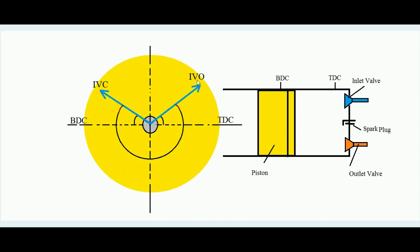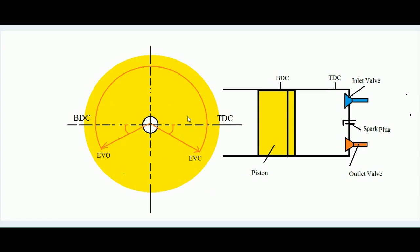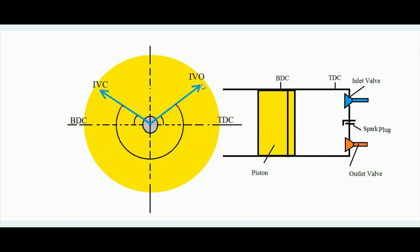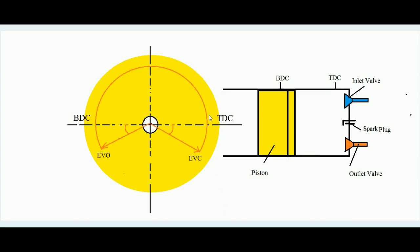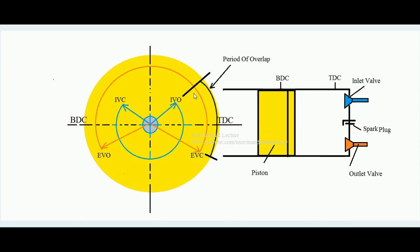We observe that the inlet valve opens a few degrees before the end of the exhaust stroke, and the exhaust valve remains open a few degrees after the end of the exhaust stroke. This means both valves are open simultaneously for a short duration near TDC. This period during which both the inlet valve and outlet valve remain open simultaneously for a small time is called the period of overlap. This concludes the valve timing diagram of an SI engine.